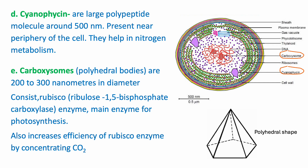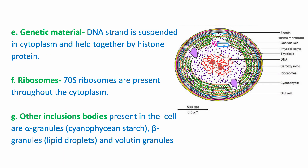Carboxysomes contain the main enzyme involved in photosynthesis, known as RuBisCO enzyme (full name: ribulose 1,5-bisphosphate carboxylase). Carboxysomes concentrate carbon dioxide and enhance the efficiency of RuBisCO. Genetic material of the cyanobacterial cell is DNA, suspended in the cytoplasm and held together by histone protein. 70S ribosomes are present throughout the cytoplasm. Other inclusion bodies present are alpha granules, beta granules, and volutin granules.